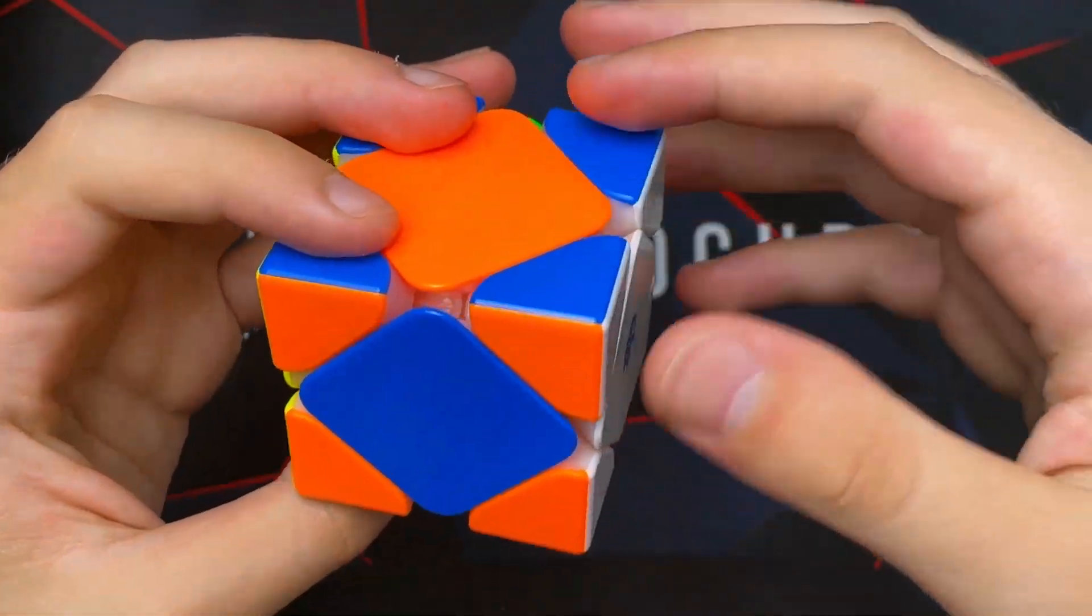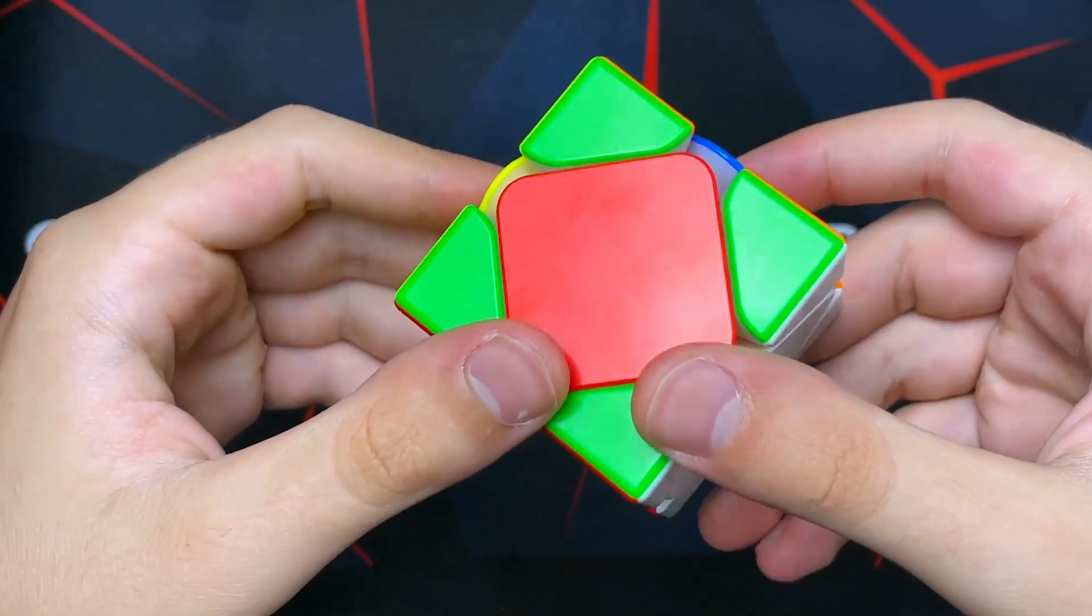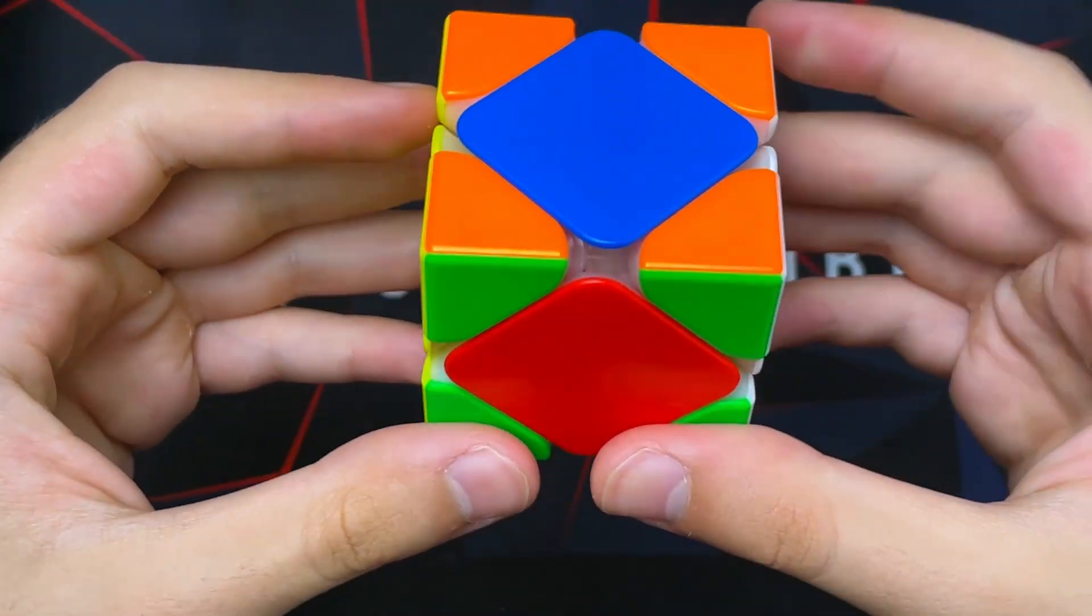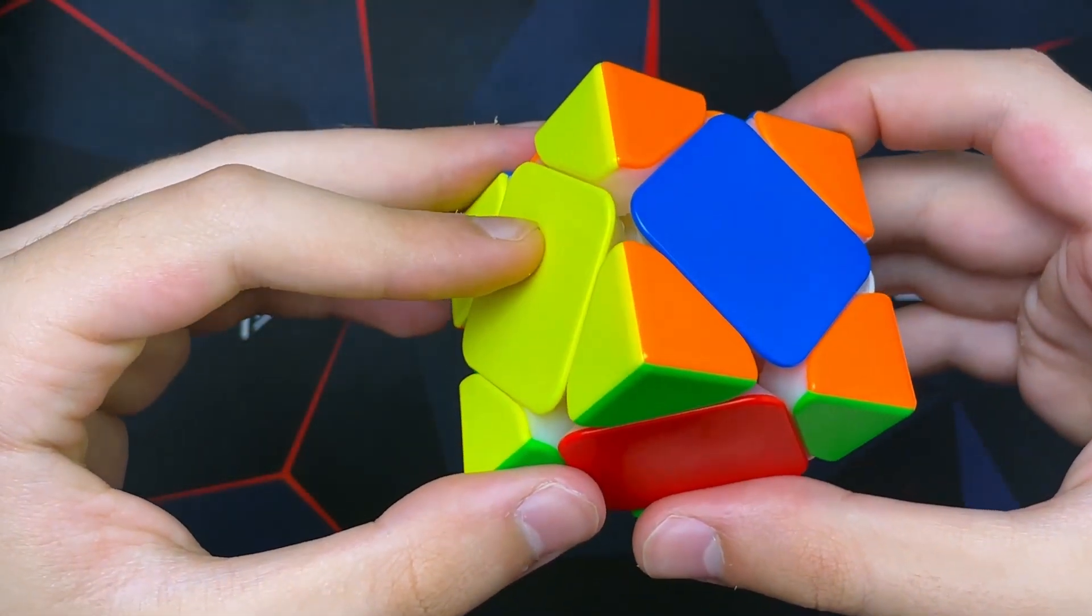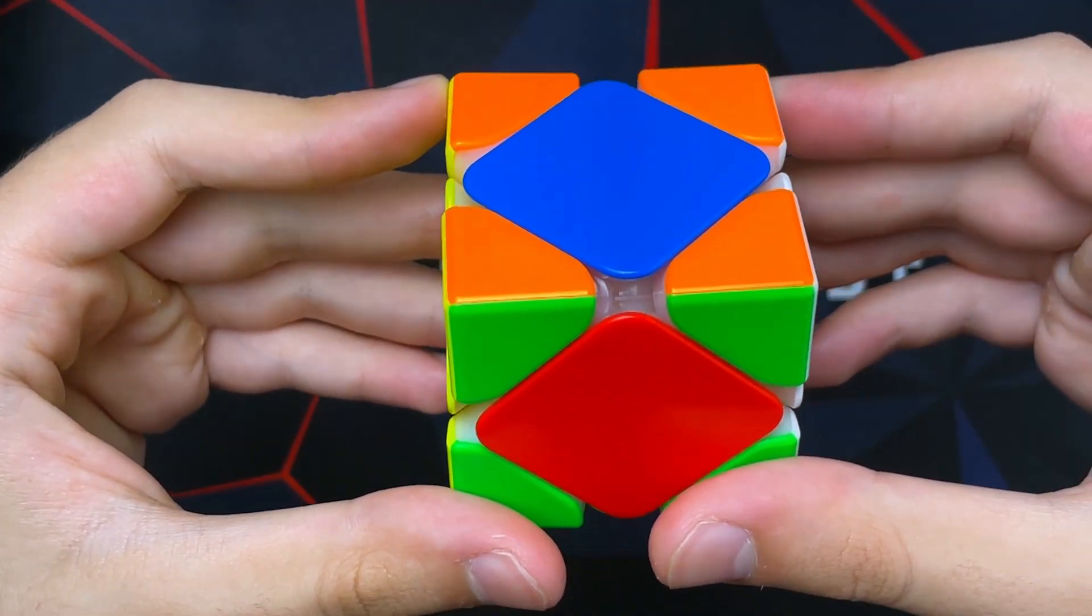From here we just have these four centers left to solve on this cube. Now this looks like a Z perm on three by three, but I just do the algorithm that we did for yellow from this angle. If you get anything other than what a U perm looks like, which I'll show you what that looks like...